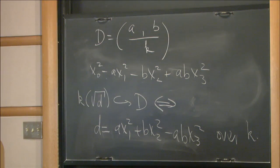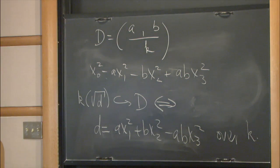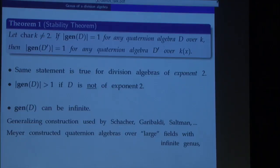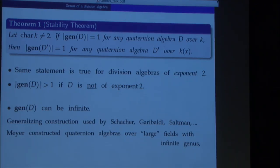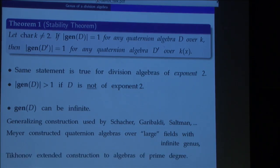As I said, the bad news is that this genus can be infinite. This can be shown by adapting a construction used by many people — I should also mention Rost, Wadsworth, and others. This construction was adapted by Jeff Meyer to construct quaternion algebras over large fields with infinite genus. That construction was generalized by Sergei Tikhonov to construct algebras of higher degree. You'll probably agree it's difficult to imagine two quaternion algebras that have the same subfields but are not isomorphic, so let me tell you something about that construction.